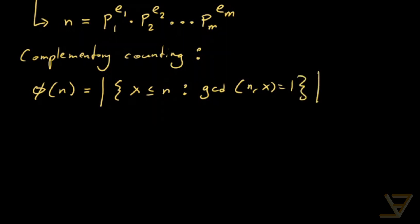Since there are n numbers in the set of positive integers from 1 to n, the total number is n in the universal set that we're working in. And we subtract from n the cardinality of the set of x less than or equal to n such that the GCD of n and x is strictly greater than 1.